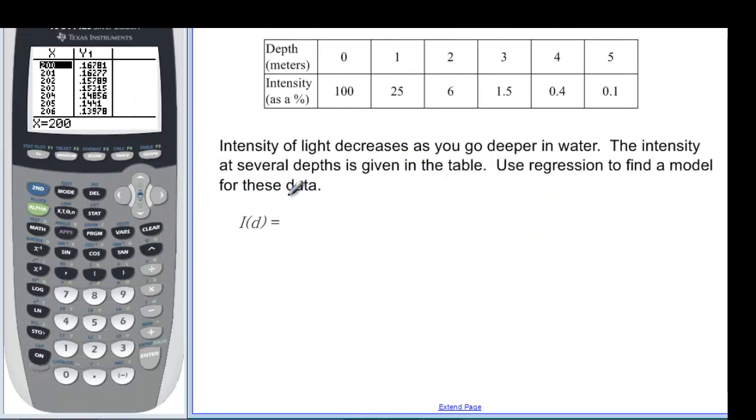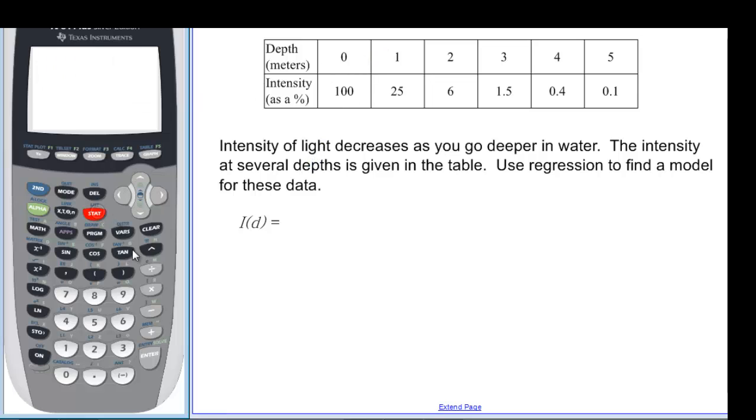All right, another example. Intensity of light decreases as you go deeper in water. The intensity at respective depths is given in our table. And we're going to use regression to find a model. So let's go back to our stat and our edit. We're going to have to clear everything out so that we can start fresh. So clear all that out. And we put in our L1. It's going to be depth. So 0, 1, 2, 3, 4, 5.